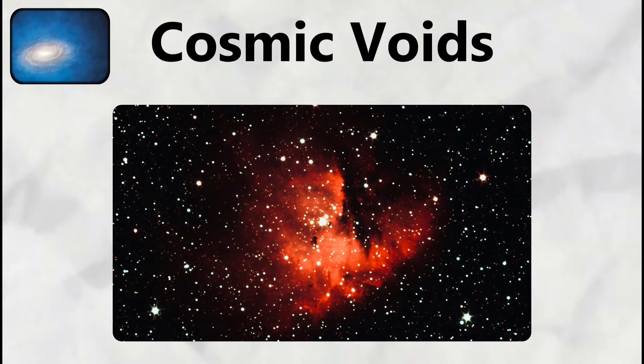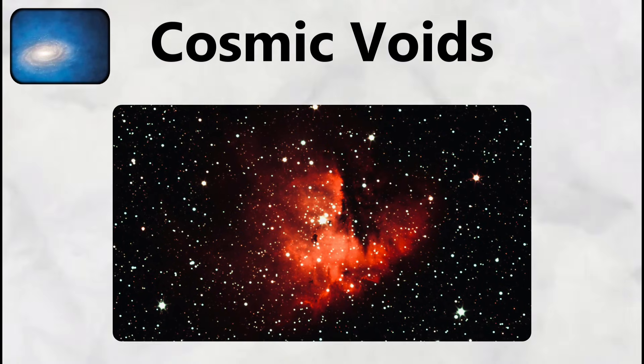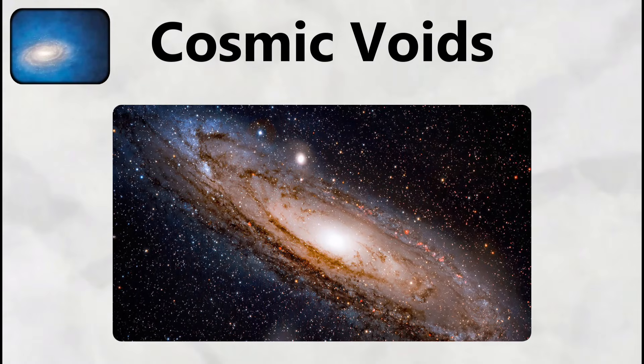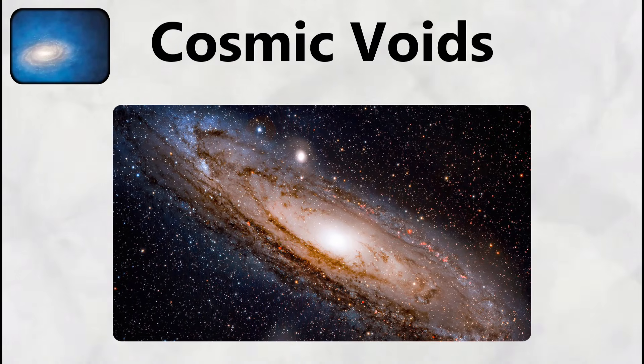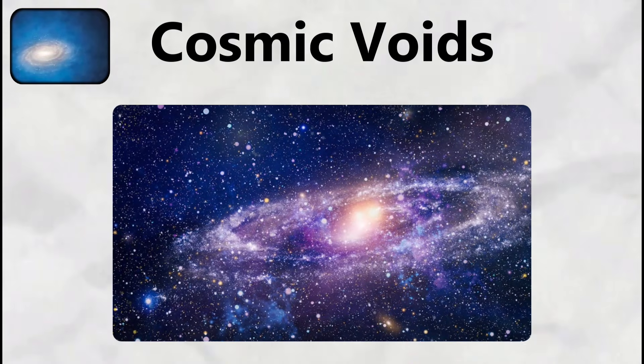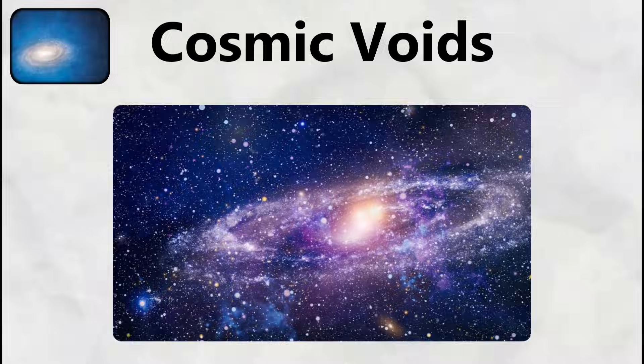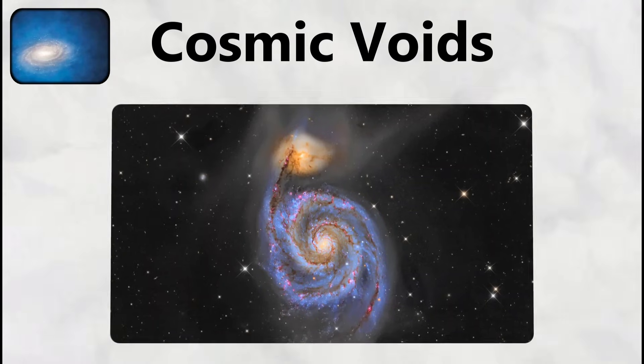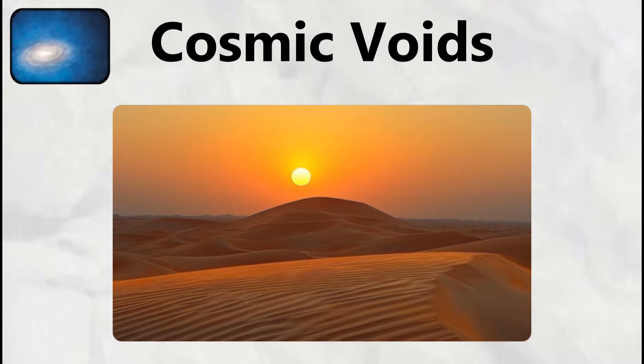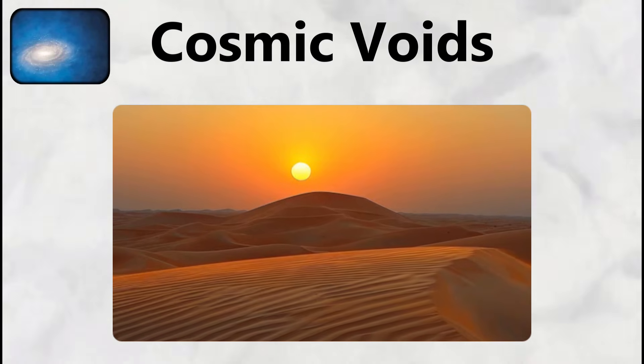Thousands of galaxies should exist based on the average density of matter in the universe. The void scale becomes terrifying when you consider that if our Milky Way galaxy were placed inside it, no other galaxies would be visible for hundreds of millions of light-years in every direction. To understand this emptiness, imagine standing in a vast desert where the nearest oasis is so far away that light from it takes hundreds of millions of years to reach you.